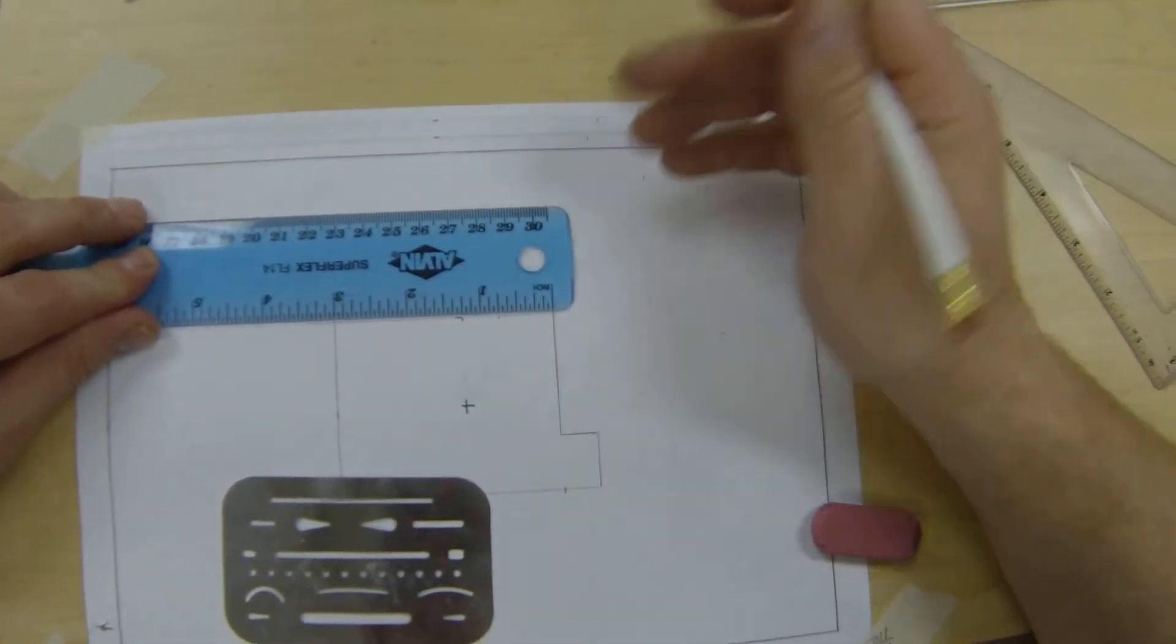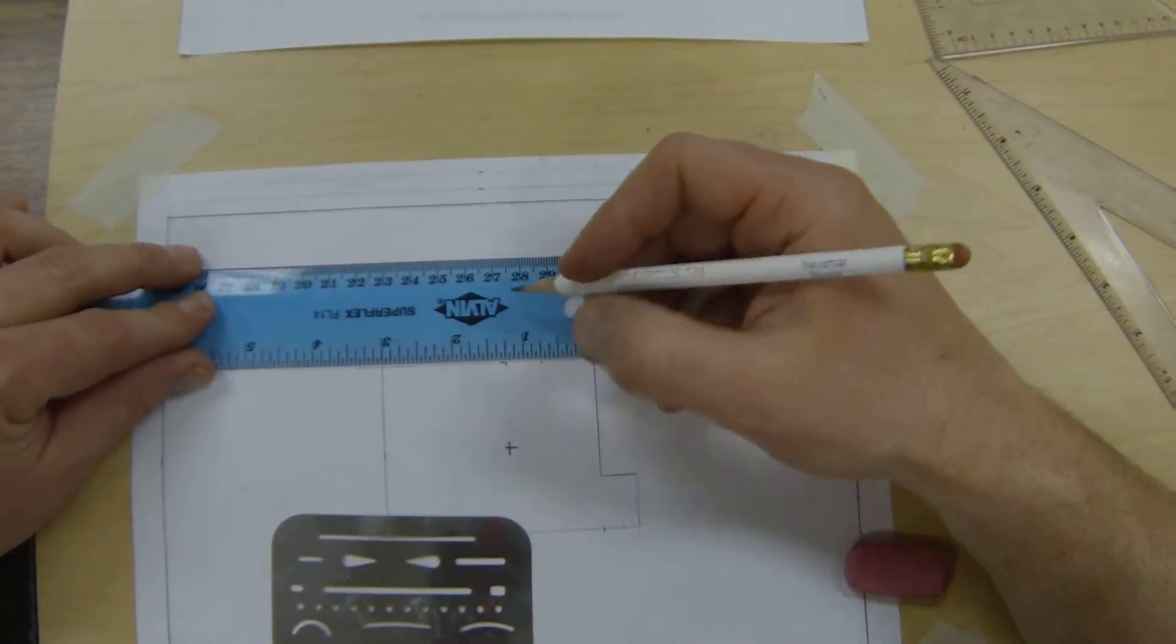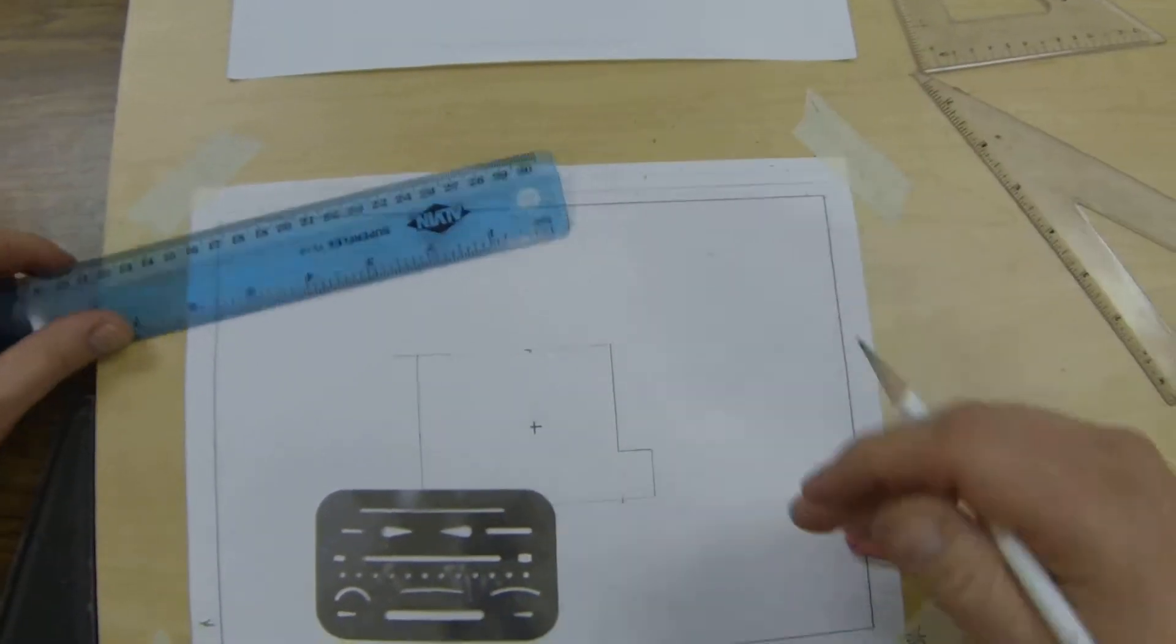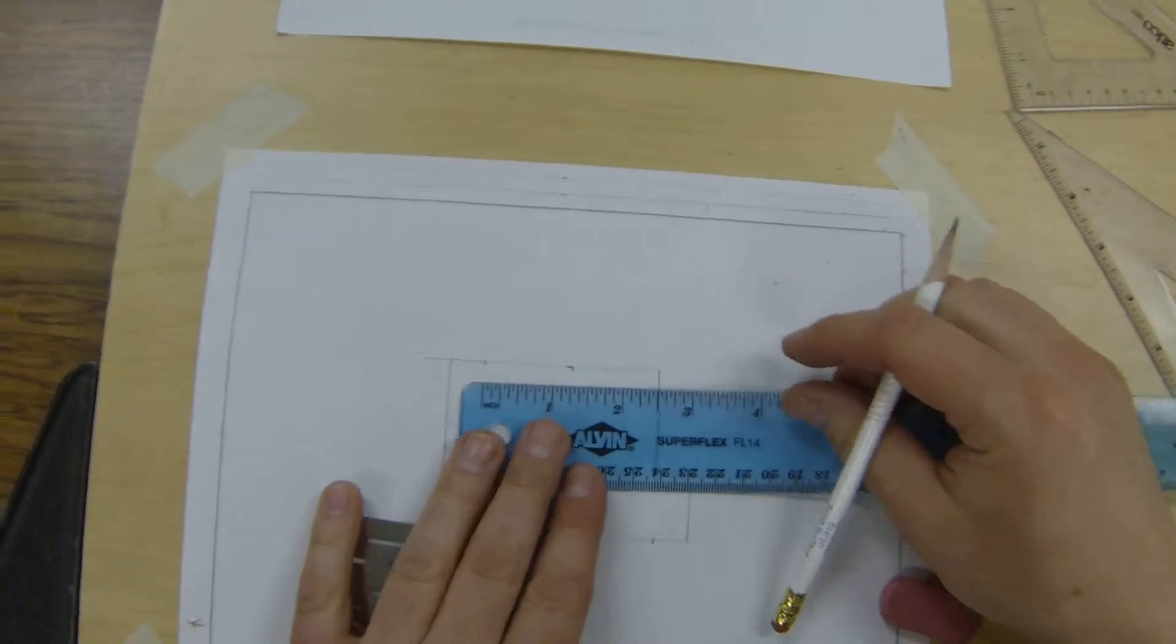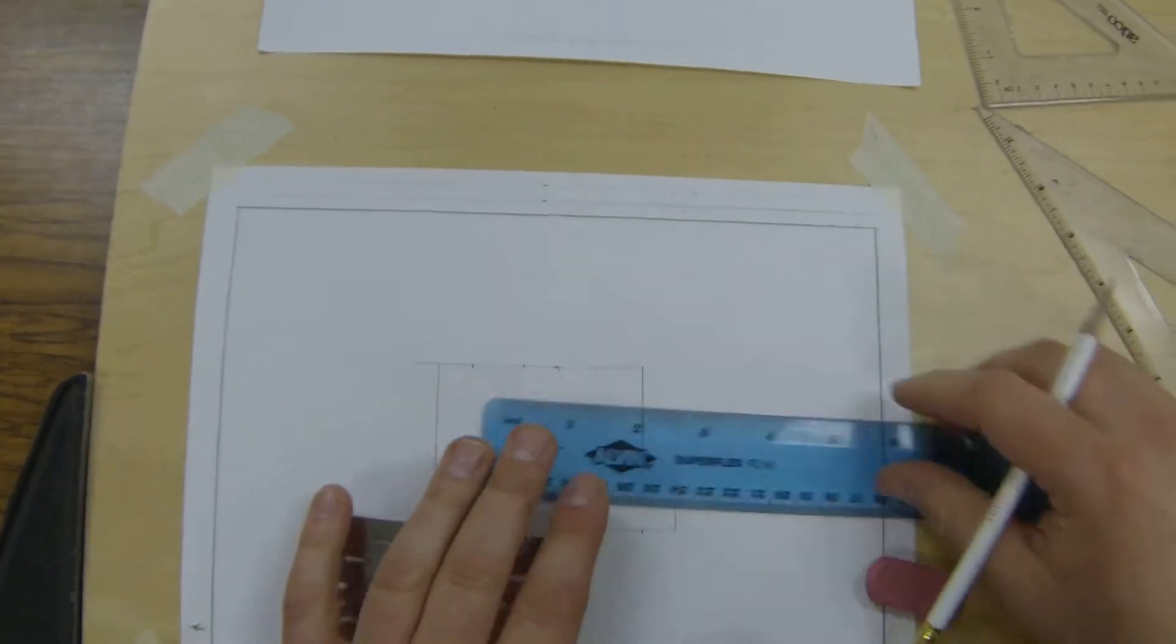From there on out I can go another inch and a quarter, so two and a half, to locate out all the points that I need. So all I'm doing right now is laying out where I'm going to measure.